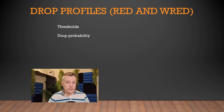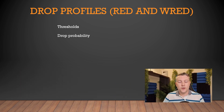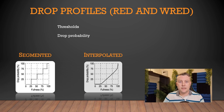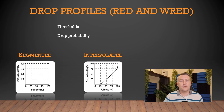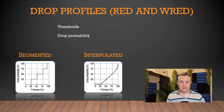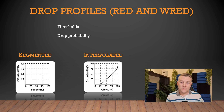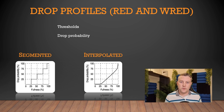There are two types of drop profile. The first one is called Segmented, and the second is called Interpolated. The difference between the two is how the drop probability increases with each threshold. The Segmented type is like a stepped system — when you reach a new threshold, the drop probability jumps up. Interpolated will gradually increase the drop probability as it goes through the thresholds. And you can see that in the graphs we've got right here.